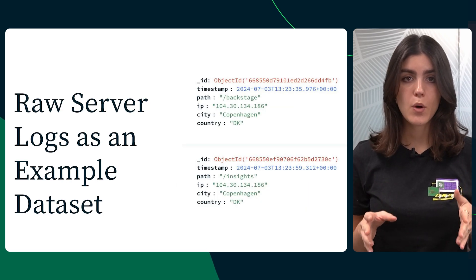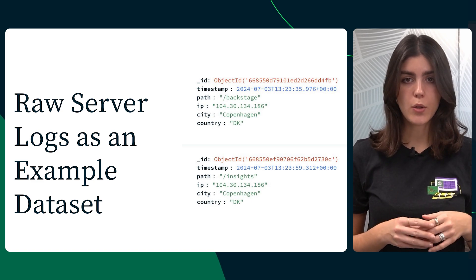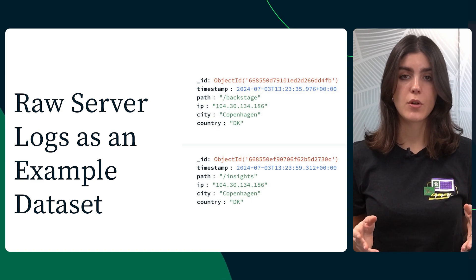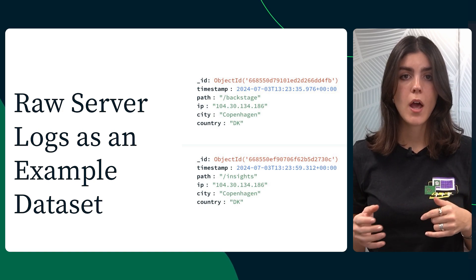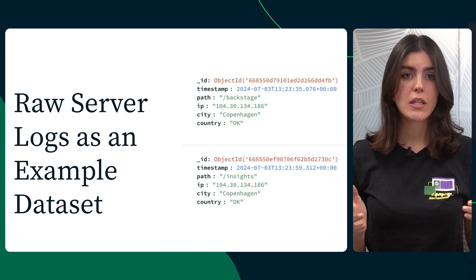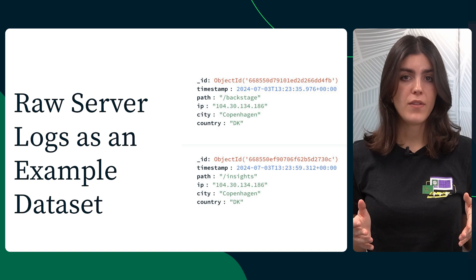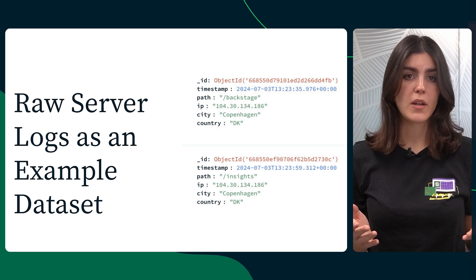For this demo, we're working with server logs. Let's take a quick look at the data model. It's a typical time series data model. We have a timestamp for each log entry, a path field containing the request payload, an IP of the originating request, and city and country information derived from the IP. Now, let's dive into the demo and see it in action.